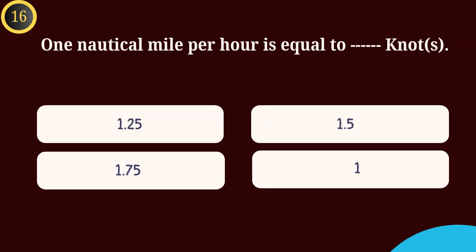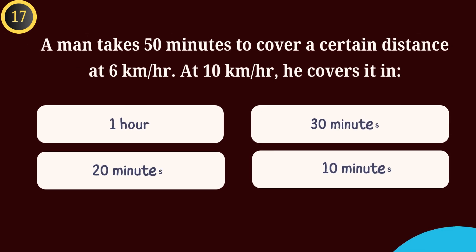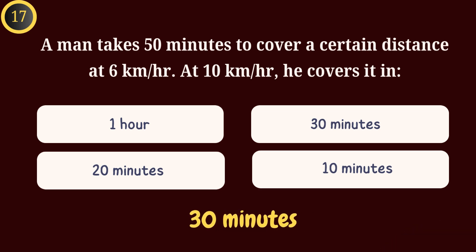Question 16: One nautical mile per hour is equal to how many knots? Answer: One. Question 17: A man takes 50 minutes to cover a certain distance at a speed of 6 km per hour. If he walks with a speed of 10 km per hour, he covers the same distance in — Answer: 30 minutes.